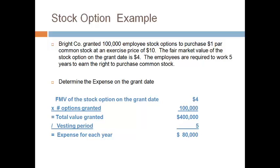The fair market value of one stock option — and it's important that this is the stock option, not the common stock — is $4. This is multiplied by the total options granted to get the total fair market value granted to employees. The total value granted is spread over the vesting period the employees work to earn the options. $80,000 will be expensed each year.